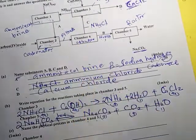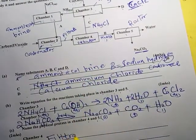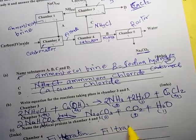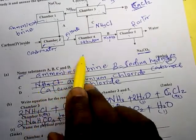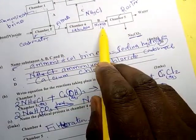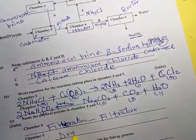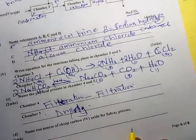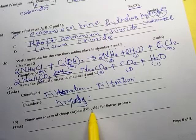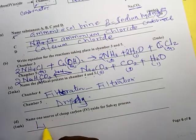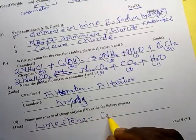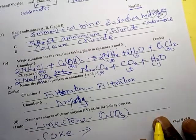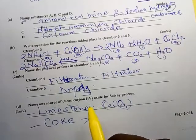The physical processes: chamber 4 is filtration. Chamber 5 involves drying — the sodium hydrogen carbonate is dried then heated. Name one source of cheap carbon dioxide for the Solvay process: it is from limestone — calcium carbonate. Carbon dioxide also comes from coke. Those are the two sources of carbon dioxide used in the Solvay process.